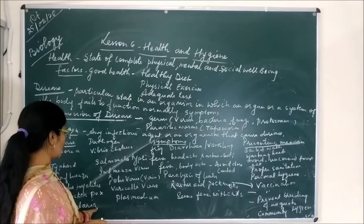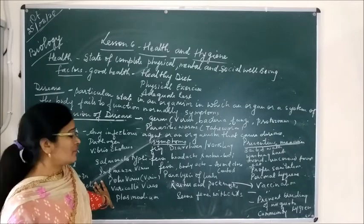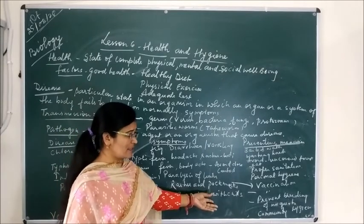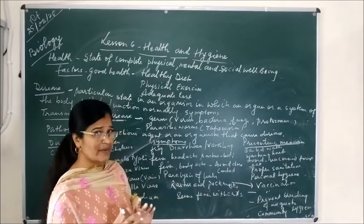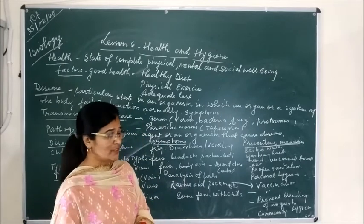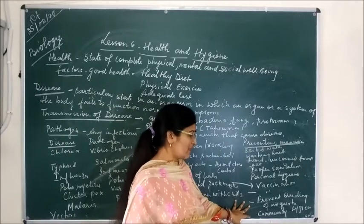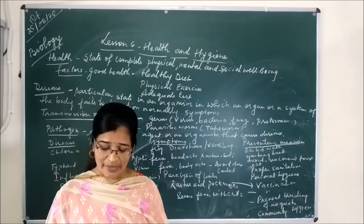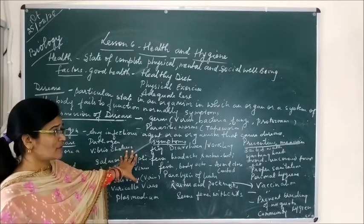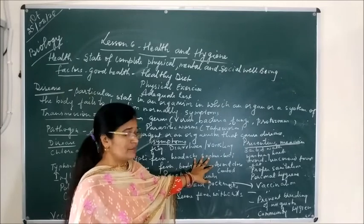Malaria, which I have already mentioned, is caused by the female Anopheles mosquito, which carries the plasmodium germ. If a person is suffering from malaria, there is severe fever with chills in the body. This disease can be prevented by preventing the breeding of mosquitoes, maintaining community hygiene, using mosquito nets, and maintaining cleanliness in our surroundings. These are communicable diseases along with their pathogens, symptoms, and preventive measures.